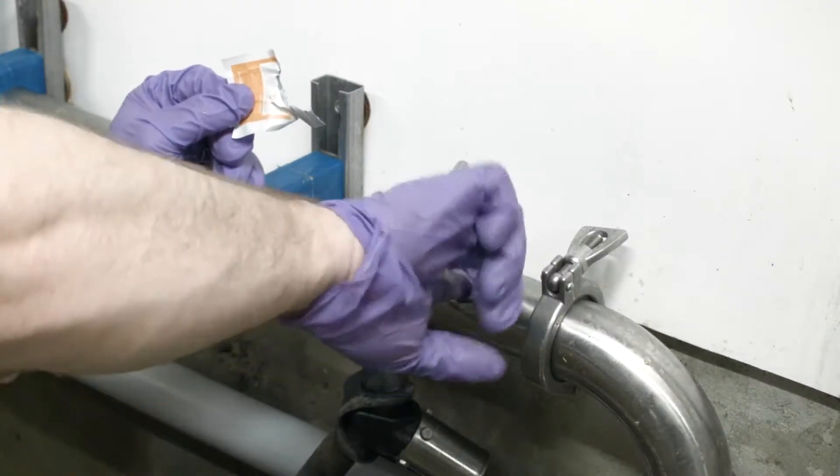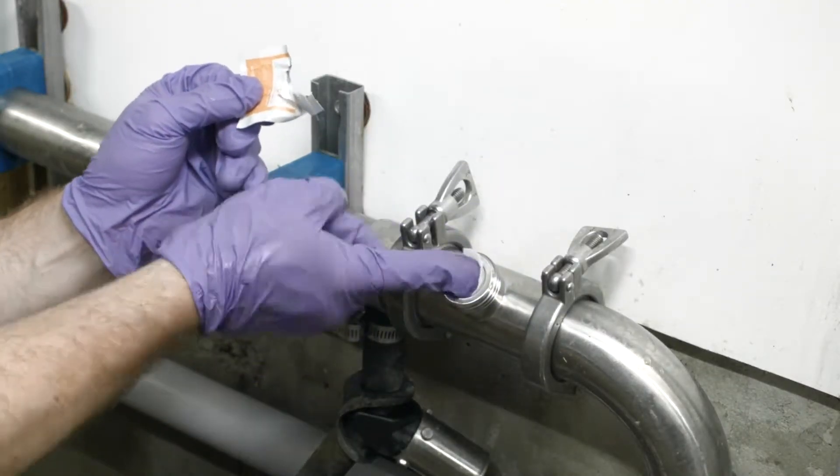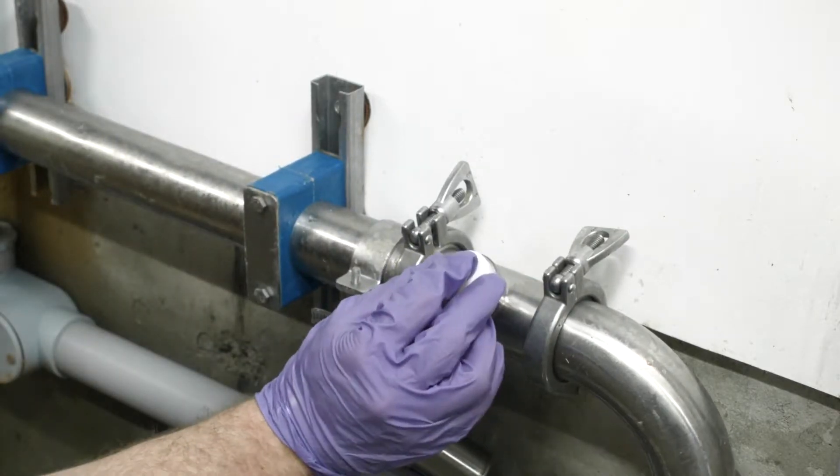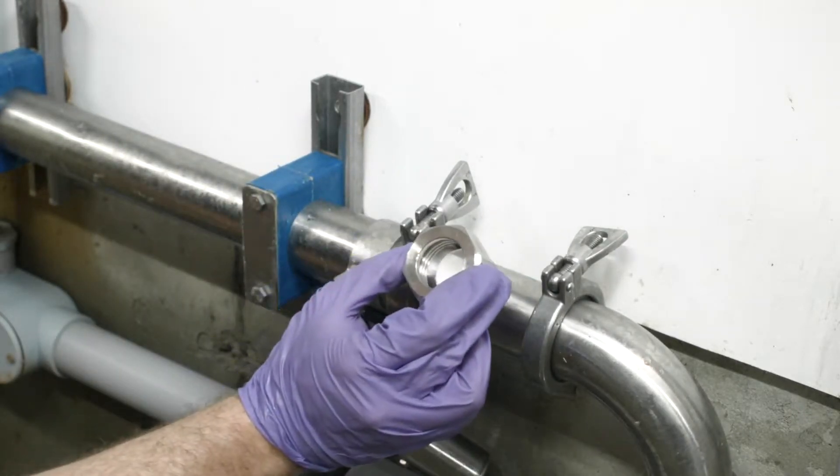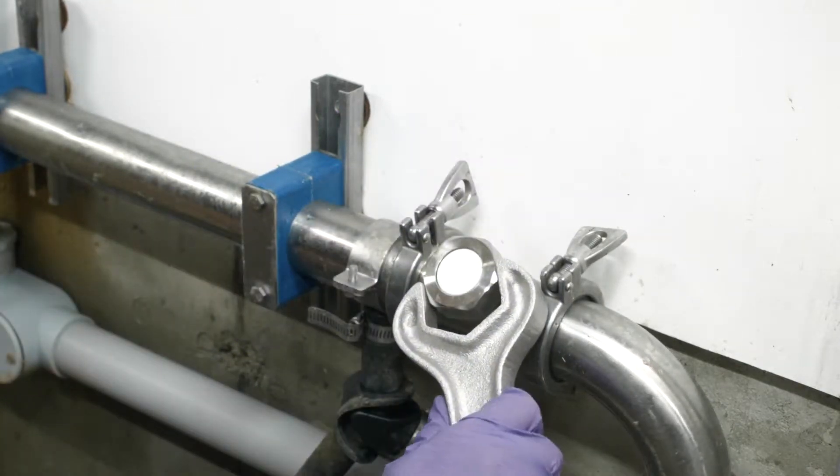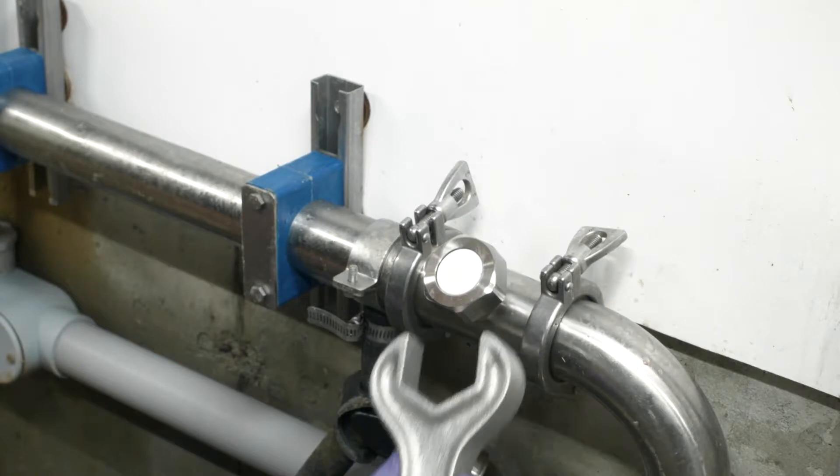With an alcohol-saturated swab or alcohol wipe, clean the inside of the stainless steel port. Place the septum into the stainless steel port and then tighten the nut over the septum. Hand-tighten the nut, then tighten it one-eighth turn with a wrench.